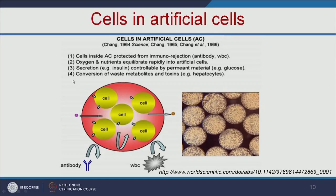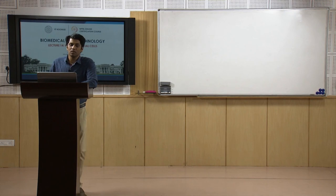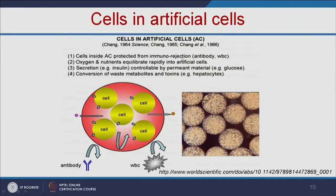When cells are used in artificial cells, they are protected inside the artificial membrane from immunorejection. When you inject cells directly into the body, they will be rejected by your immune system. But when these cells are protected in polymeric capsules, they are shielded from immune rejection.